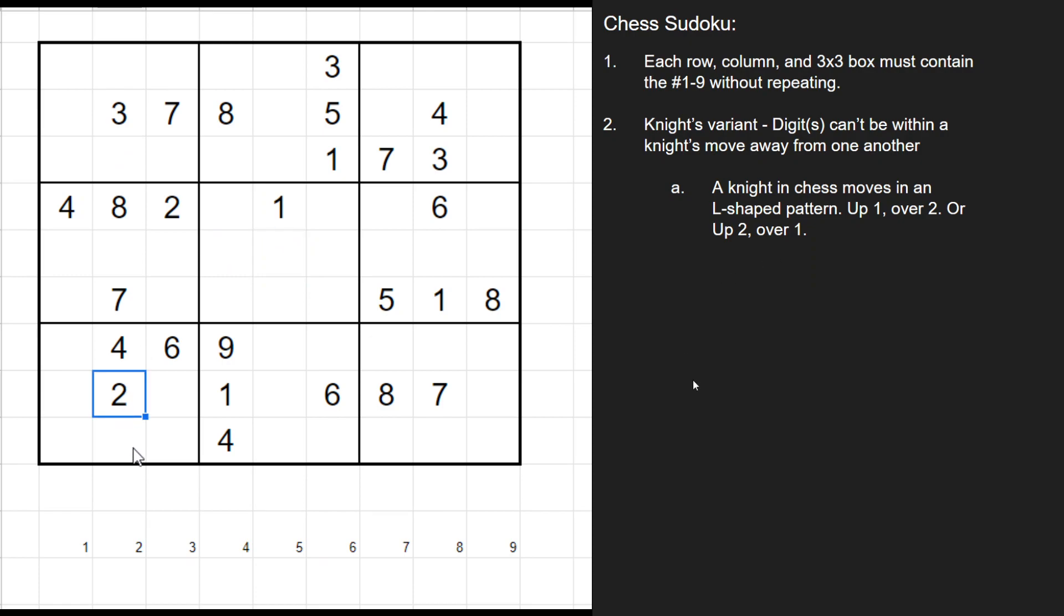Now, if we look at the 2s, you can see there's a 2 in that column and that column in the bottom box and the middle box. So that leaves these 3 cells for the 2. But we know that this bottom left one can't be a 2 because it's a Knights move away. Up 1 and over 2. So that just leaves these 2 cells as a 2. I don't know which one's which so I would just pencil it in like that.